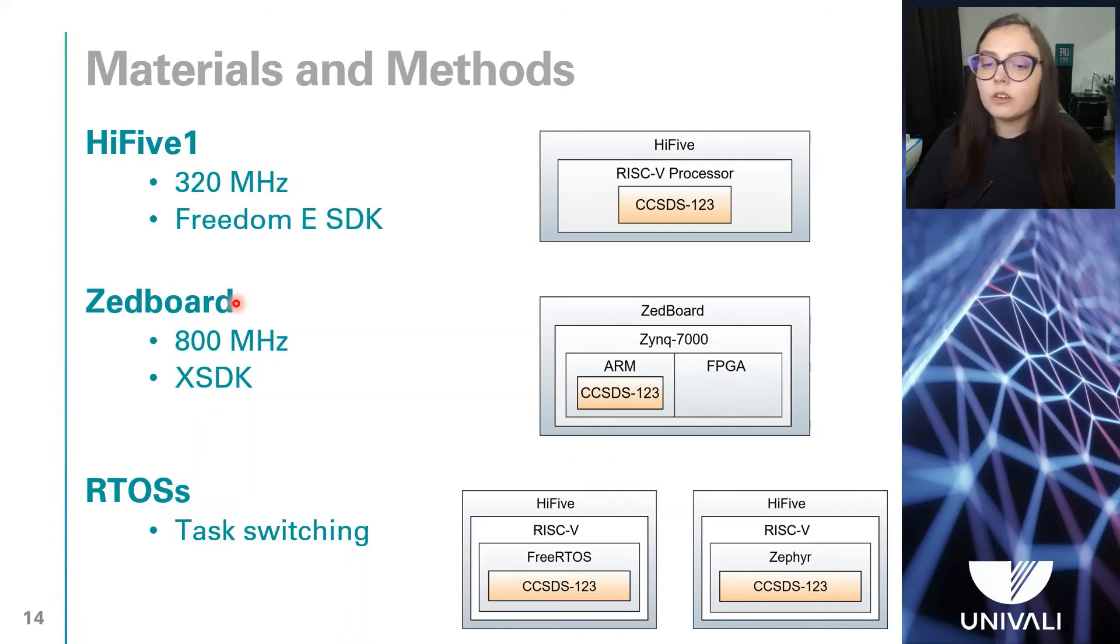This ARM processor can operate at up to 800 MHz and performs 2.5 DMIPS per MHz. For the experiment, it was configured to run at 800 MHz.